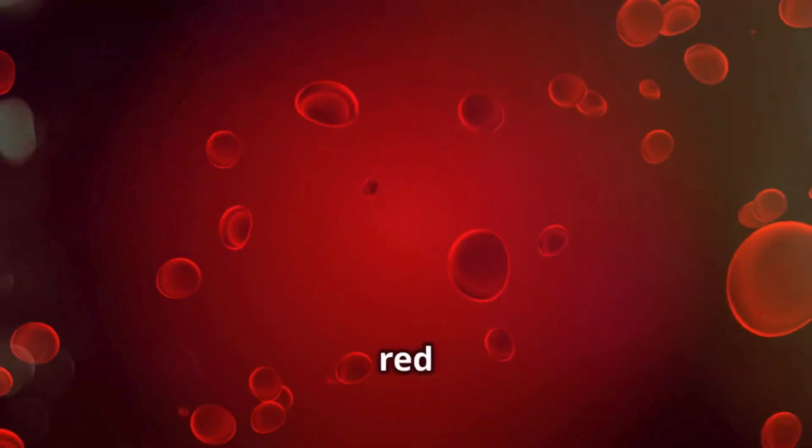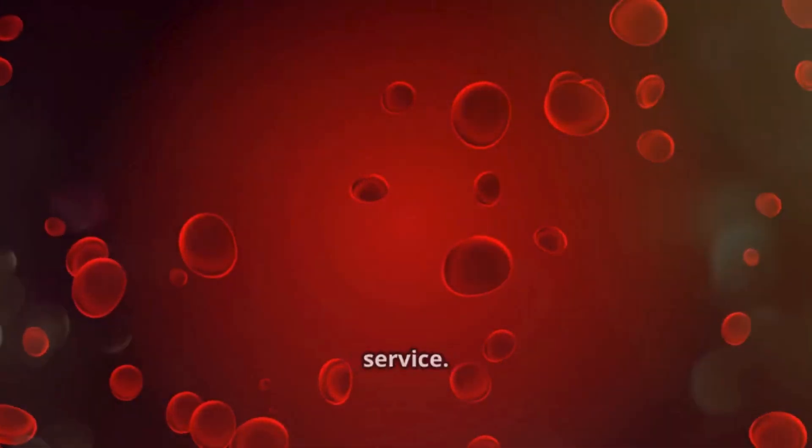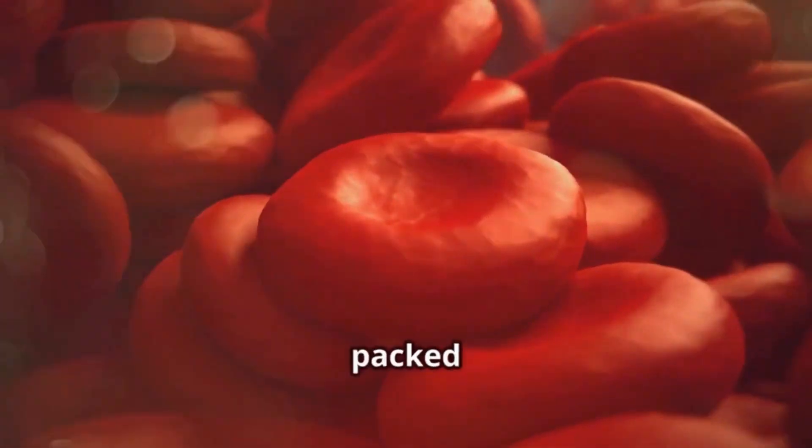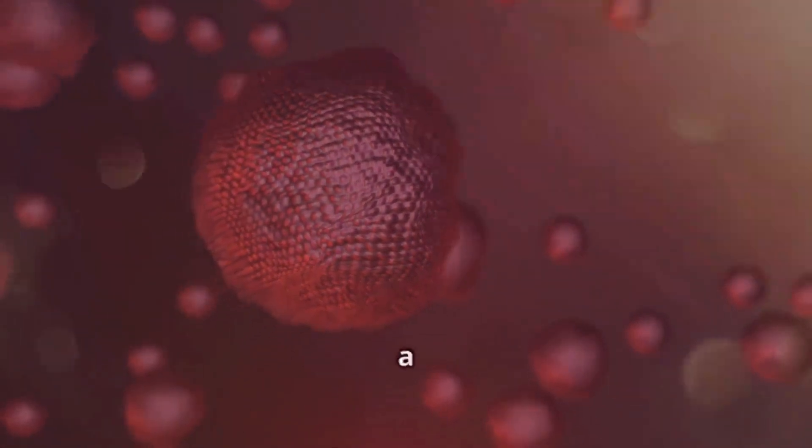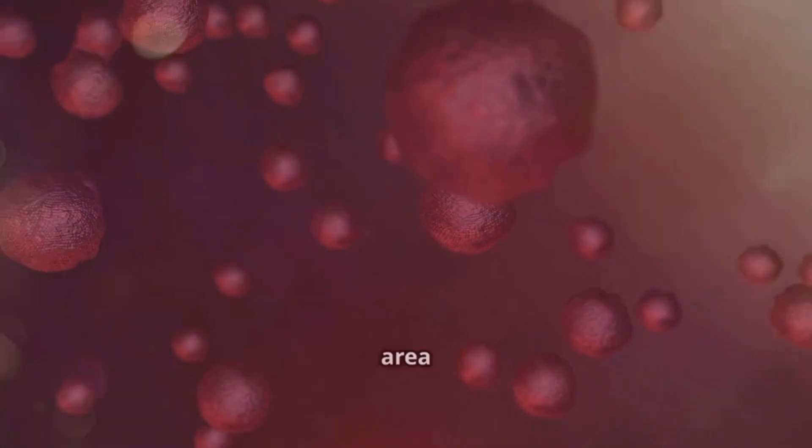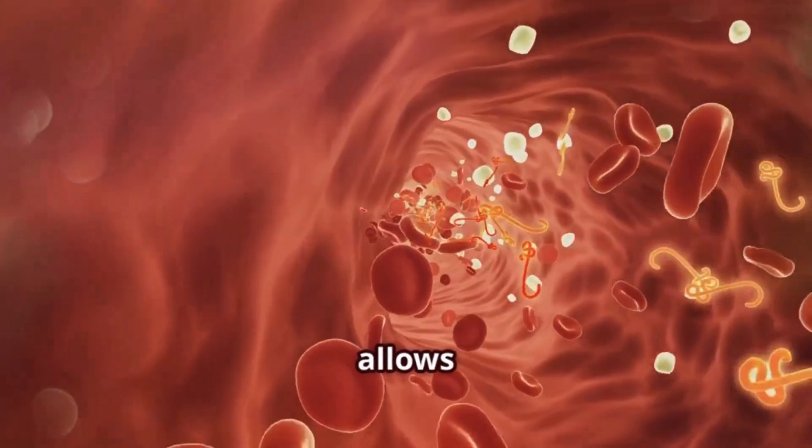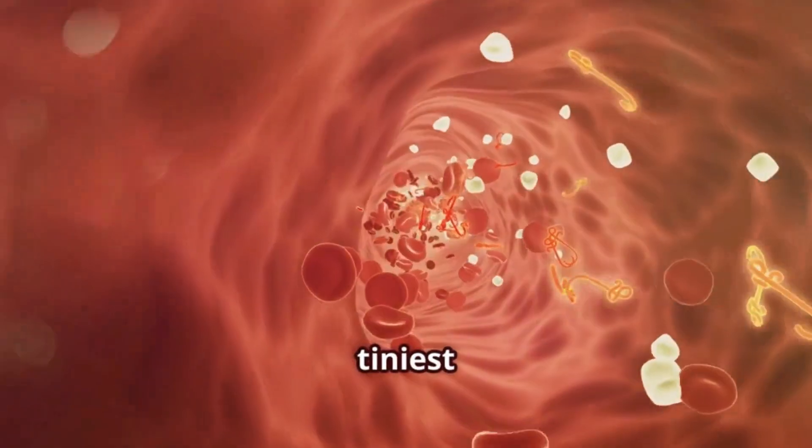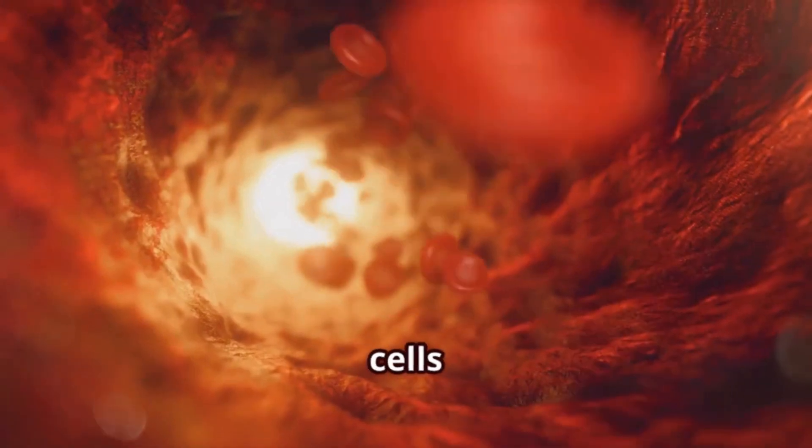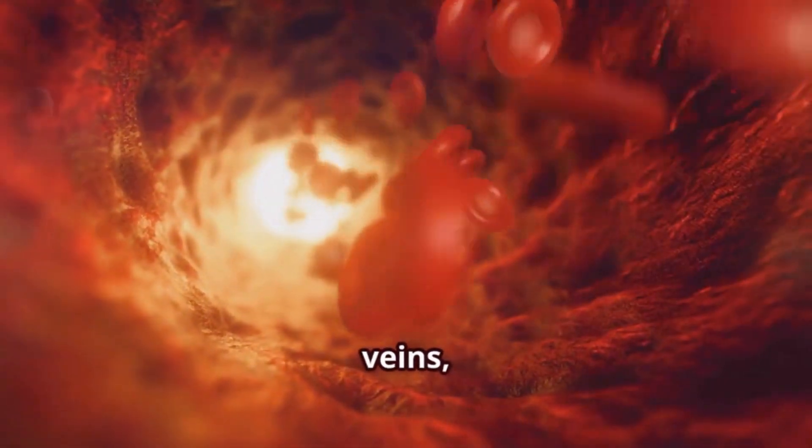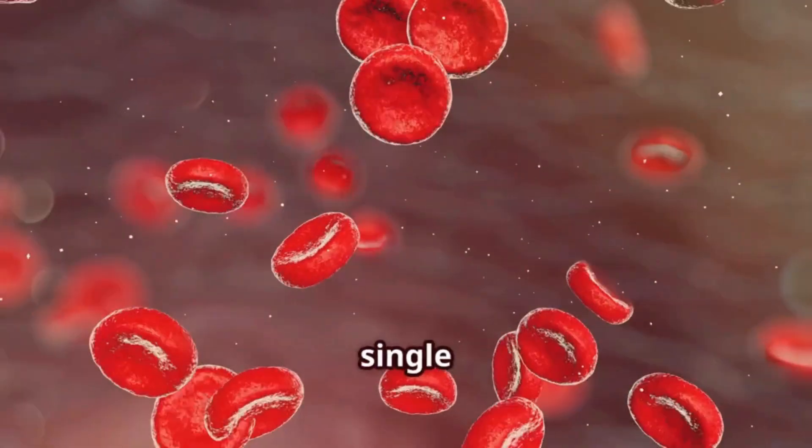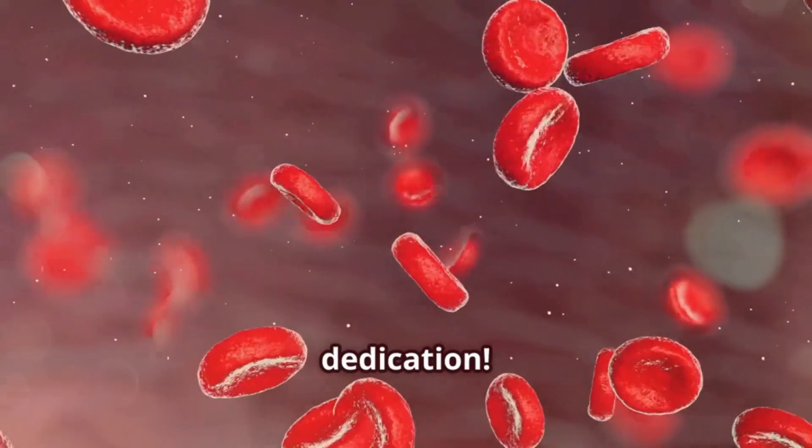Now let's hop aboard a red blood cell—the body's dedicated delivery service. These donut-shaped cells are packed with hemoglobin, a special protein that binds to oxygen. Their unique biconcave shape, like a donut with a thin center, gives them extra surface area to carry more oxygen and allows them to squeeze through even the tiniest blood vessels. Red blood cells are constantly on the move, traveling through miles of arteries, veins, and capillaries to deliver oxygen to every single cell in your body.